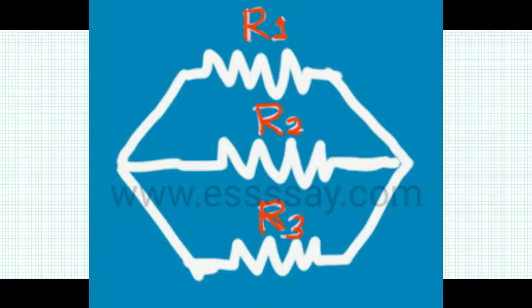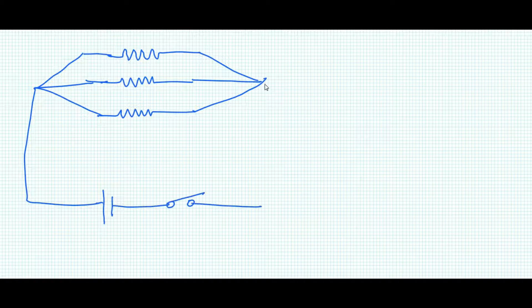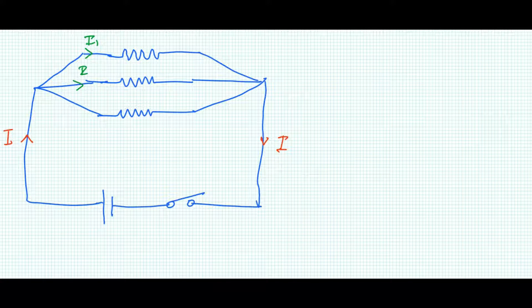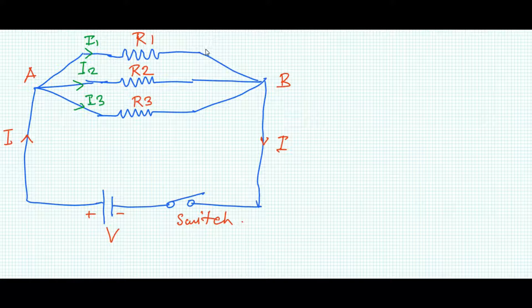To explain about the combination of resistors in parallel, let me first draw a circuit diagram. Here is the circuit diagram. We are showing here three resistors R1, R2, and R3.